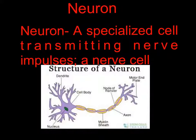A neuron is a specialized cell transmitting nerve impulses, which is a nerve cell. As you can see, I have a picture which is the structure of a neuron.